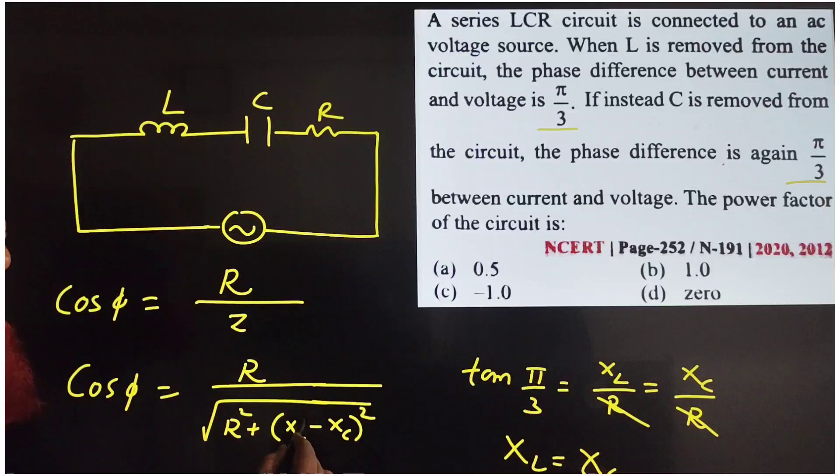When these two are same, this is going to be 0. When this is going to be 0, cos φ is nothing but R by R, which is going to be 1.